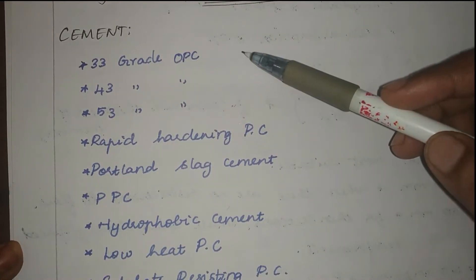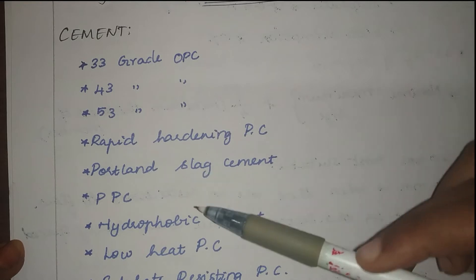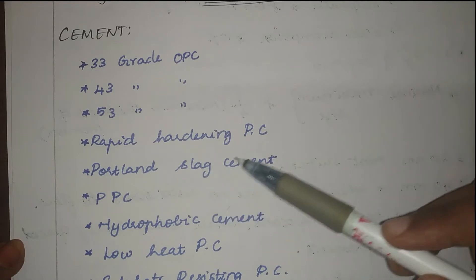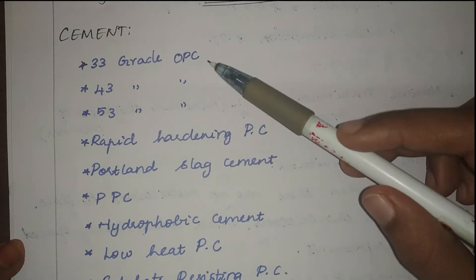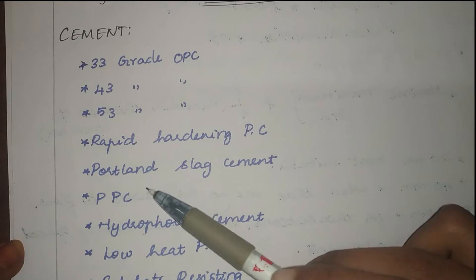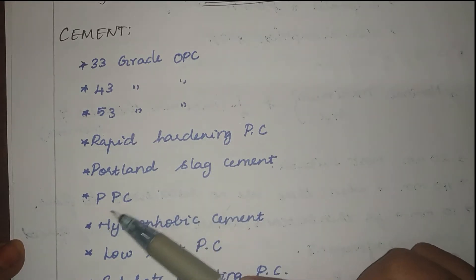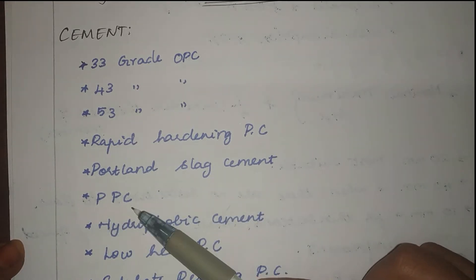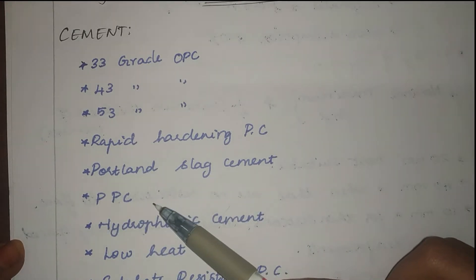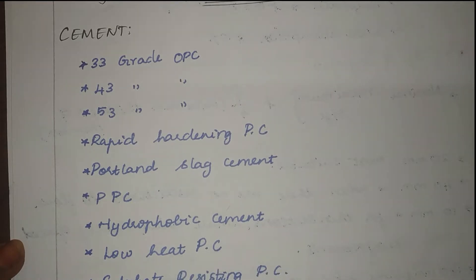The cement types covered are: 33 grade OPC, 43 and 53 grade OPC, rapid hardening Portland cement. OPC is ordinary Portland cement. We also have Portland slag cement, Portland pozzolana cement — commonly called PPC — hydrophobic cement, and low heat Portland cement.